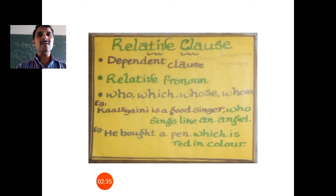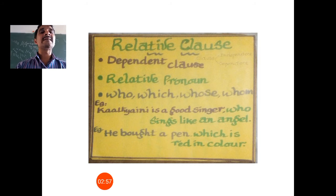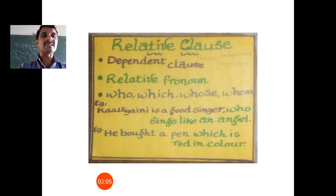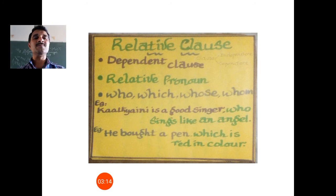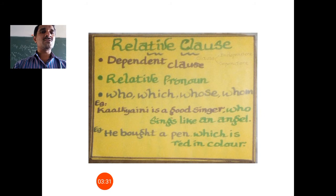Let's see an example: 'Katyaini is a good singer who sings like an angel.' If you omit the main clause and read only 'who sings like an angel,' there is no meaning or sense. Only when we add 'Katyaini is a good singer' does 'who sings like an angel' have its meaning. Here 'who' is the relative pronoun and 'who sings like an angel' is the relative clause. Similarly, 'He bought a pen which is red in color' — 'which is red in color' has no identity unless it depends on 'he bought a pen.'